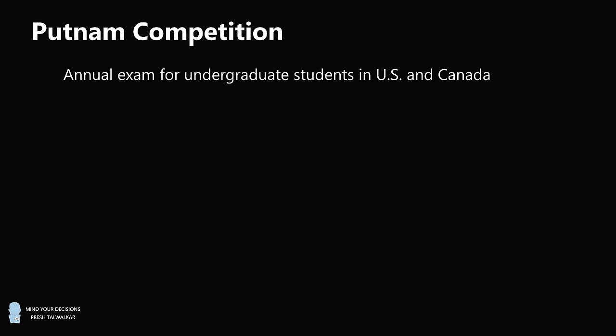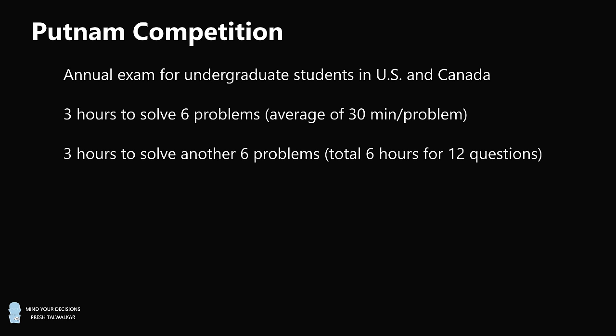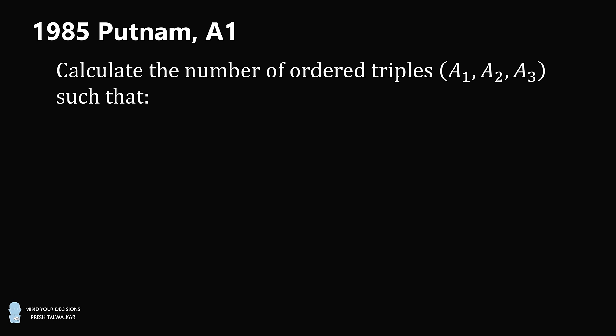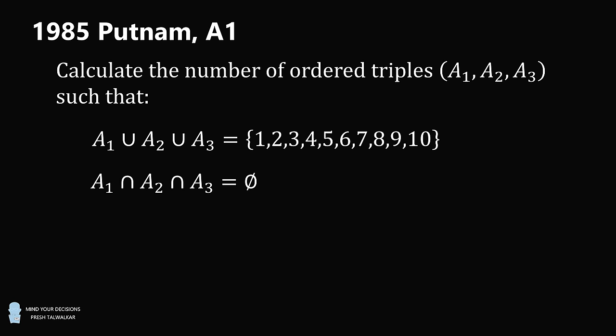Problem 2. The Putnam Competition is an annual exam for undergraduate students in the United States and Canada. There are 3 hours to solve 6 problems, for an average of 30 minutes per problem, and then another 3 hours to solve another 6 problems, for a total of 6 hours for 12 questions. Each question is worth 10 points for a maximum of 120 points, but the average or median score is about 1 point, even though the students taking the competition are exceptional at math. Today's video is about a 1985 Putnam Question A1. Calculate the number of ordered triples such that their union is the integers from 1 to 10, and their intersection is the empty set.